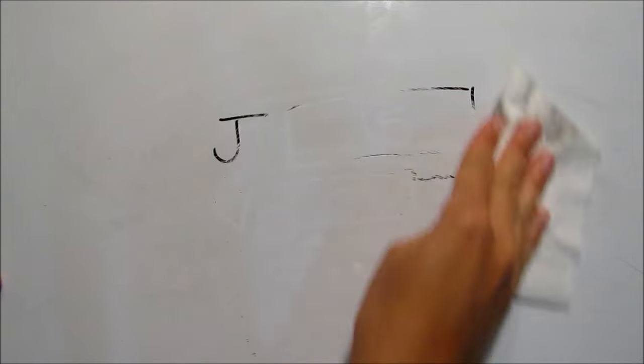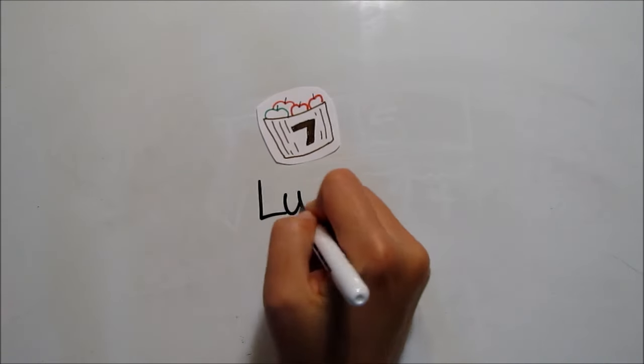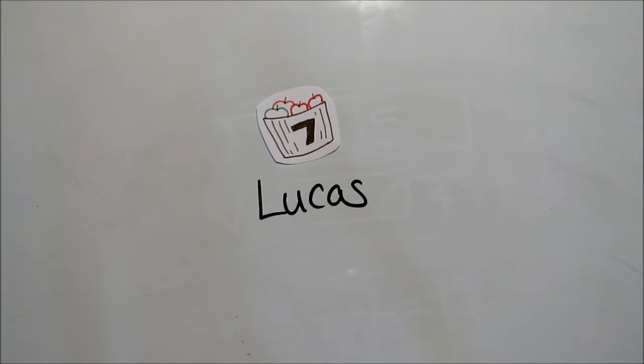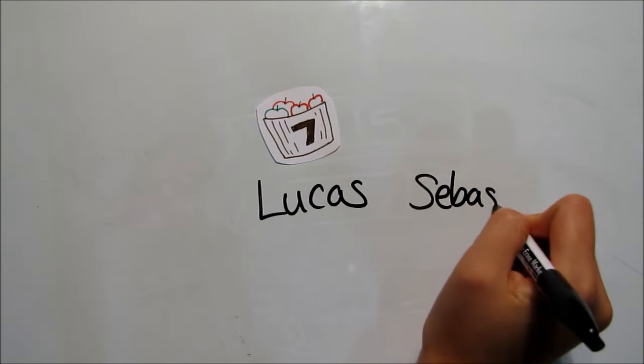One last strip diagram for this video. I don't know that I've actually seen a problem like this, but it's a possibility. If Lucas has 7 apples, and Sebastian has 5 more apples than Lucas, we're still comparing. We're not combining Lucas's and Sebastian's apples.